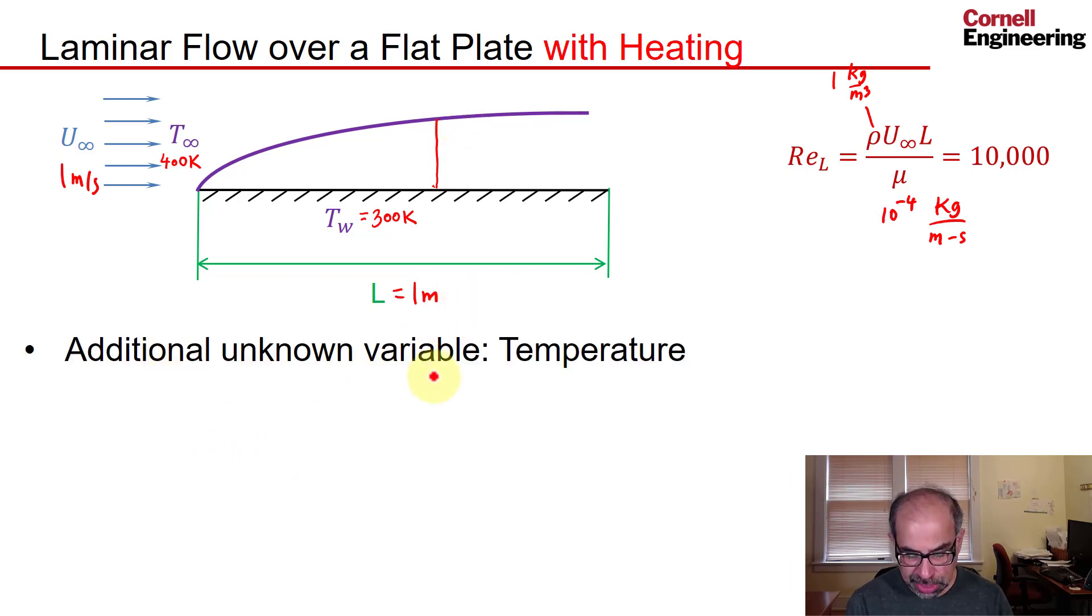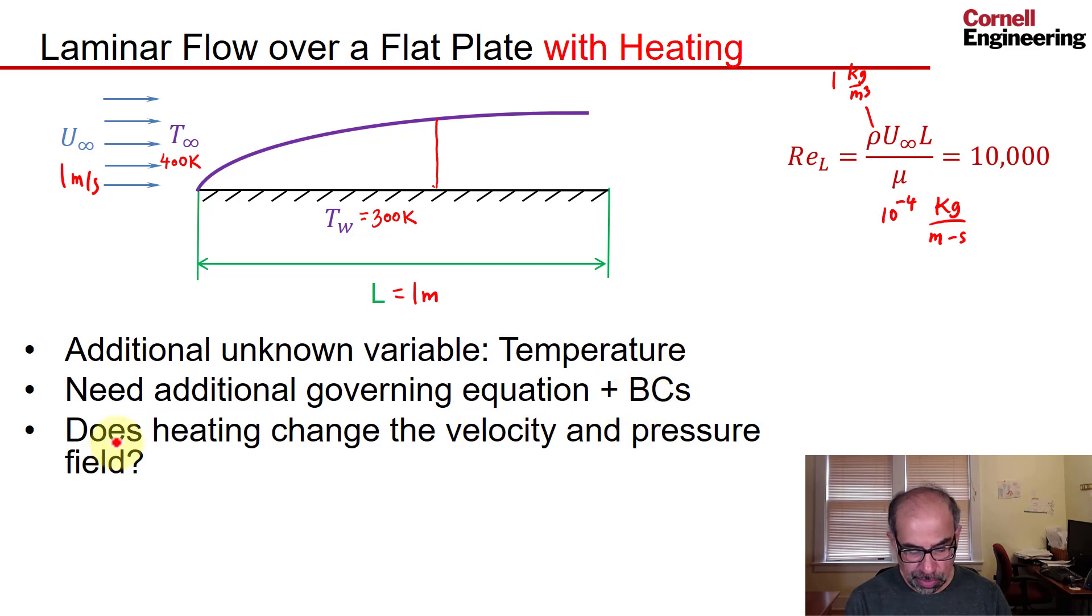That means we have an additional unknown variable to solve for, temperature. We need an additional governing equation plus the associated boundary conditions. One fundamental question to address is: does heating change the velocity and pressure field?